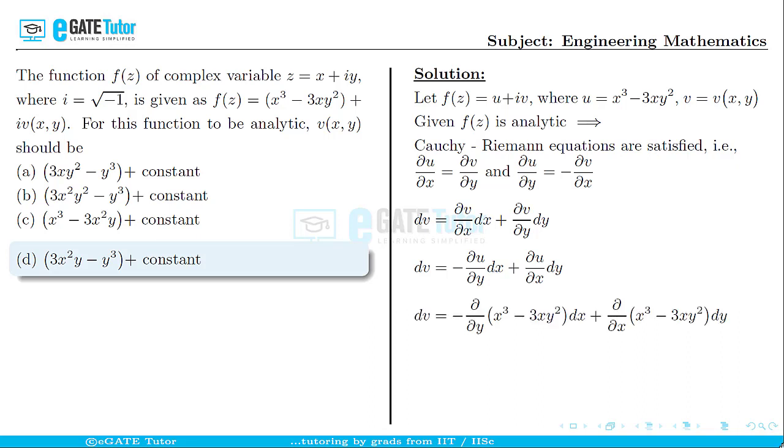Upon partially differentiating the first term with respect to y, we will end up with dv = 6xy dx. When we partially differentiate the second term with respect to x, we get 3x² - 3y² times dy.